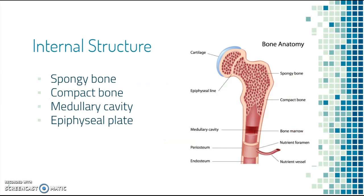There are different types of bone. If we take a closer look at the internal structure, we have spongy bone, compact bone, we have a medullary cavity, and we have an epiphyseal plate — that's something you might know as your growth plate. Our spongy bone is going to be where the red marrow is, our medullary cavity is going to contain yellow marrow, which is going to help us with fat storage, and our epiphyseal plate is going to be at the end of bones.